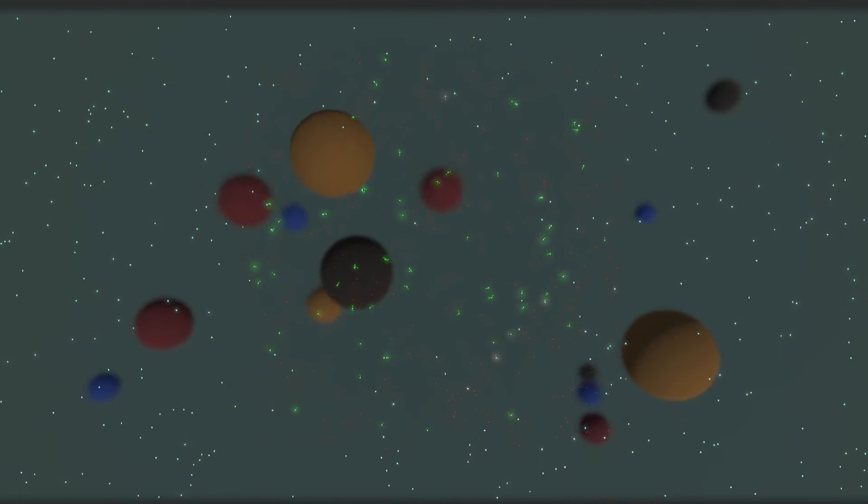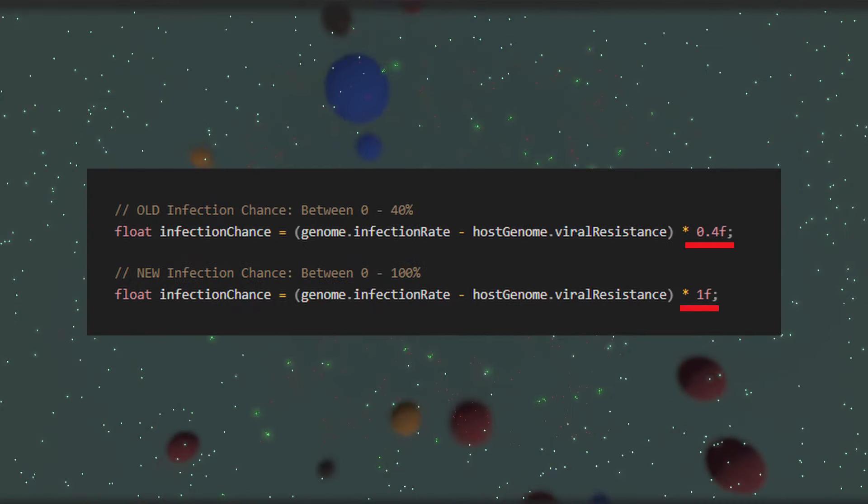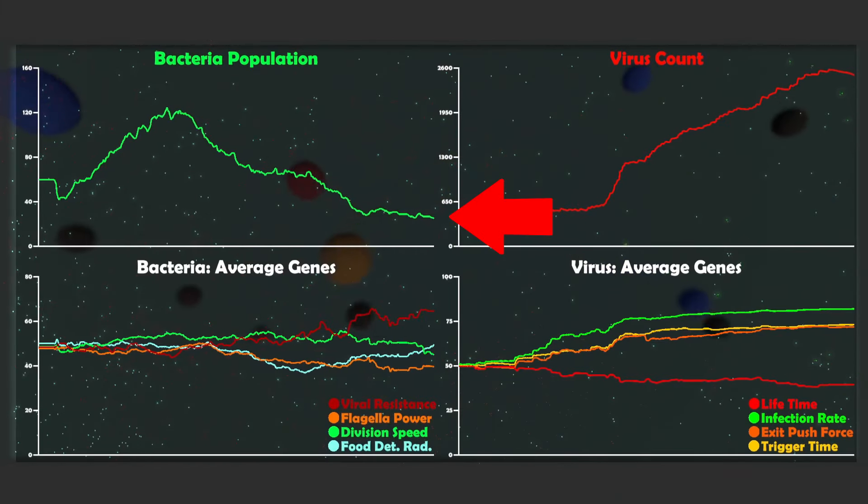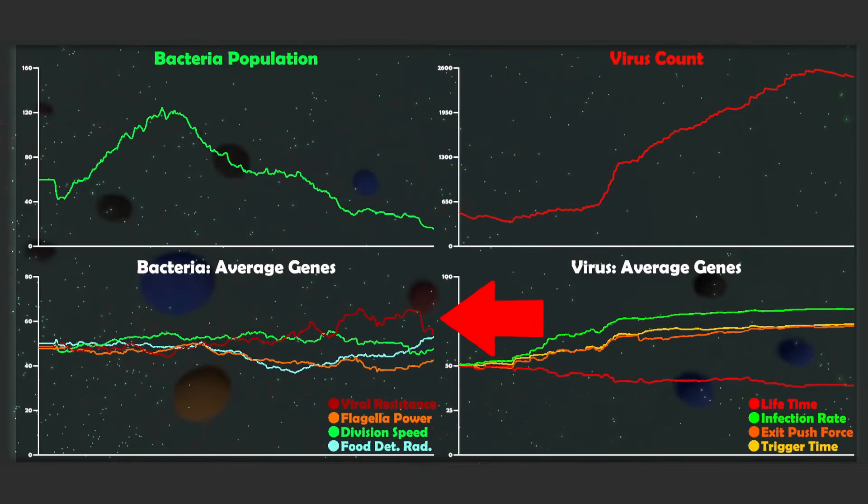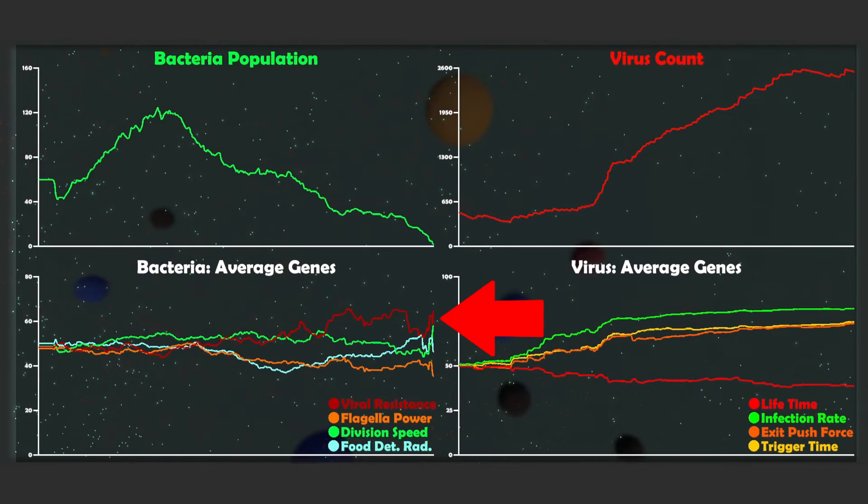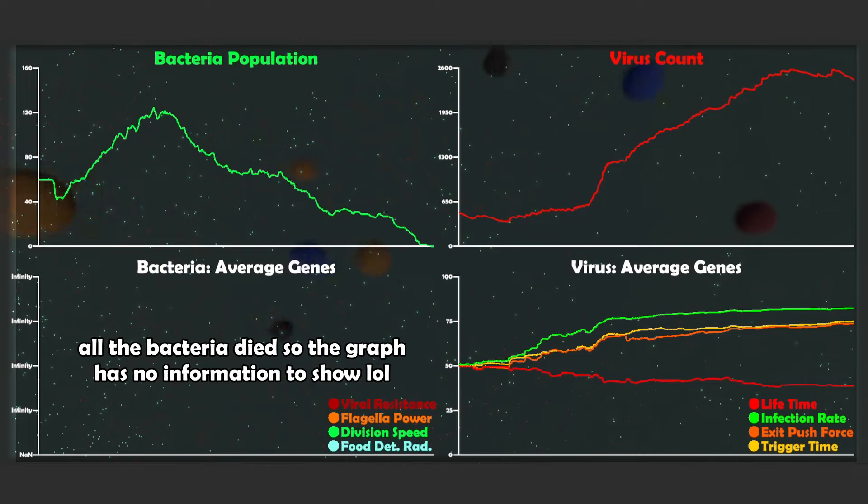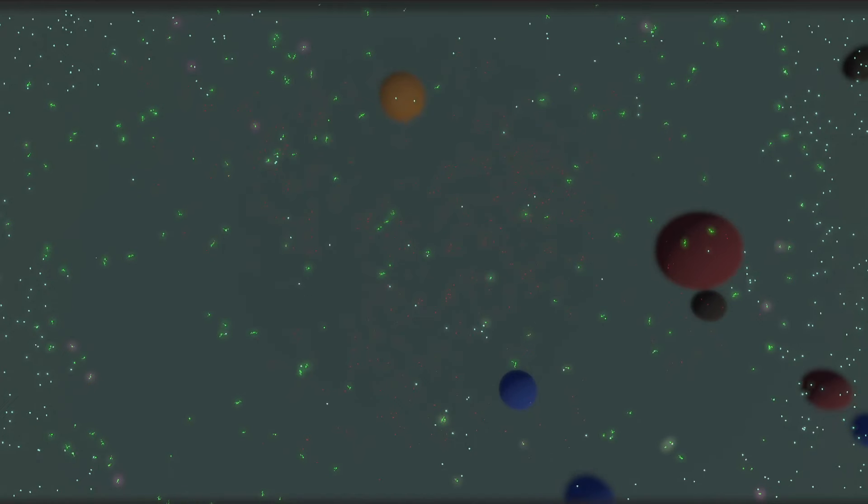So to compensate for that, I increased the base amount of their infection chance. Here in this run, you can see that the bacteria actually got wiped out, but the viral resistance gene was constantly climbing. So you can see that it was very useful against surviving the attack of the virus.